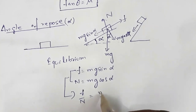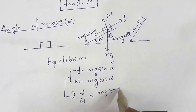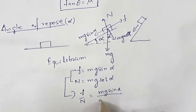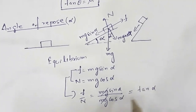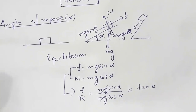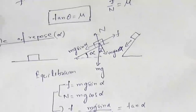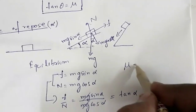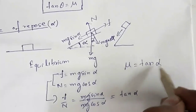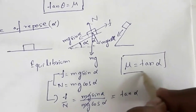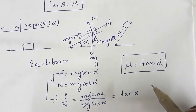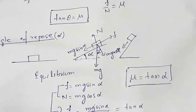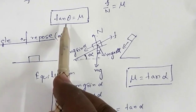F/N equals mg sin α divided by mg cos α, so mg cancels and we get tan α. Since F/N equals μ, we have μ = tan α. So tangent of angle of repose equals coefficient of friction. Earlier we also found that tangent of angle of friction equals coefficient of friction.